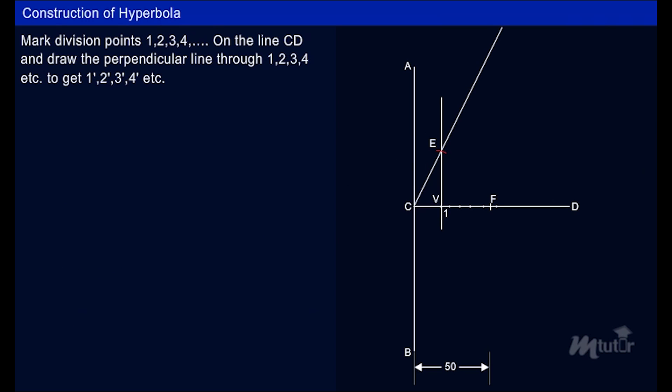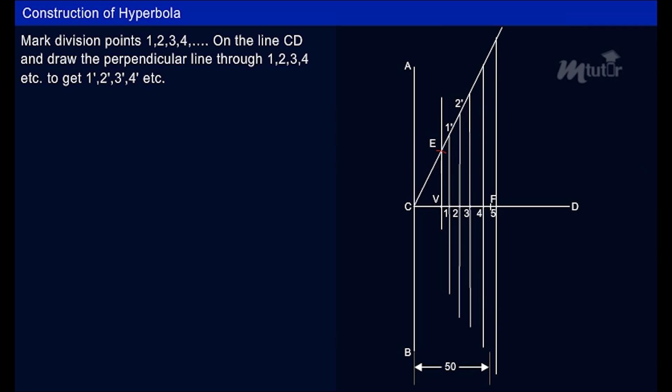Mark division points 1, 2, 3, 4 on the line CD and draw the perpendicular line through 1, 2, 3, 4, etc. to get 1', 2', 3', 4', etc.